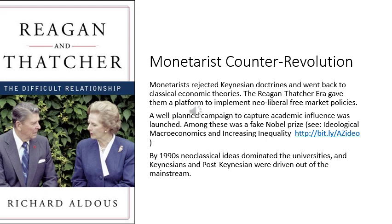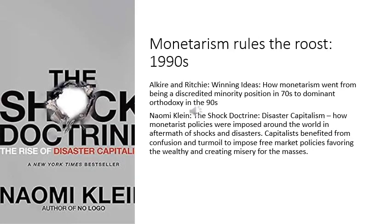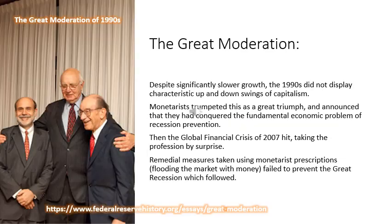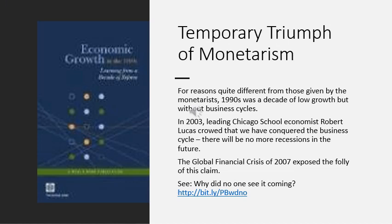And so they successfully plotted a counter-revolution, which came to power with Reagan and Thatcher. By the 1990s, the neoclassical economists and the monetarists dominated academia. The 1990s was called the decade of the great moderation. It had low but lackluster growth, but one thing it didn't have was business cycles — no huge ups and downs in business, which had been characteristic of capitalism until then. This was considered a great triumph by the monetarists, who crowed that they had conquered the most important problem of macroeconomics: preventing recessions.